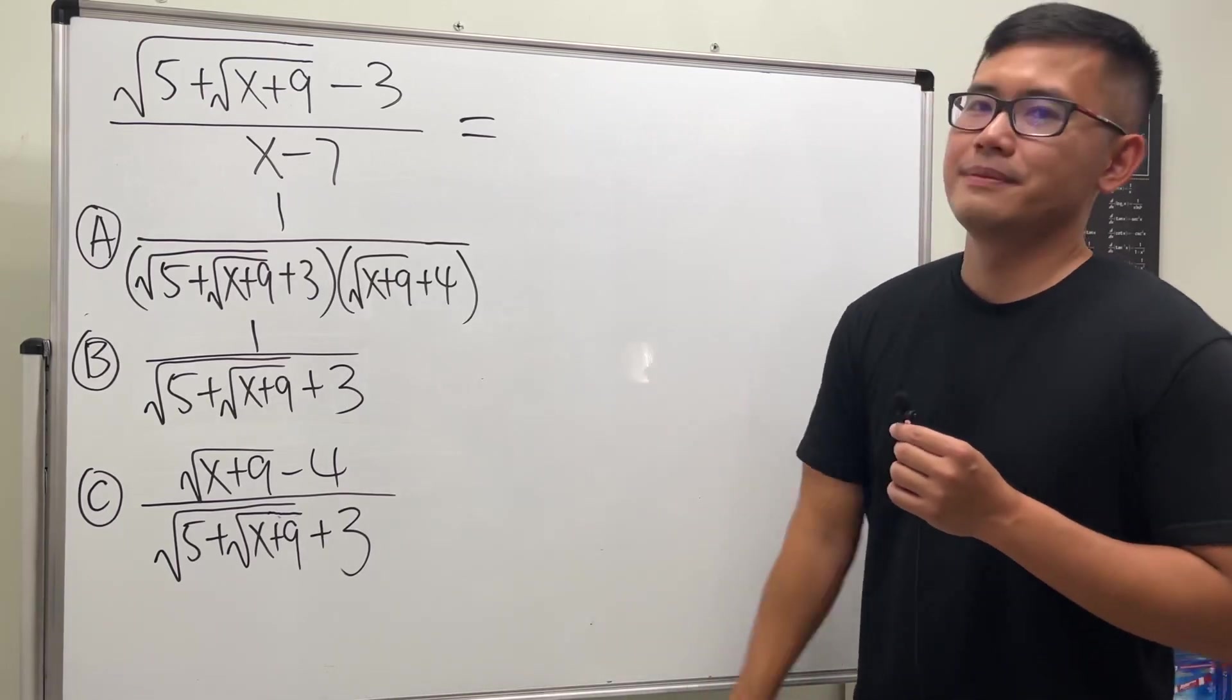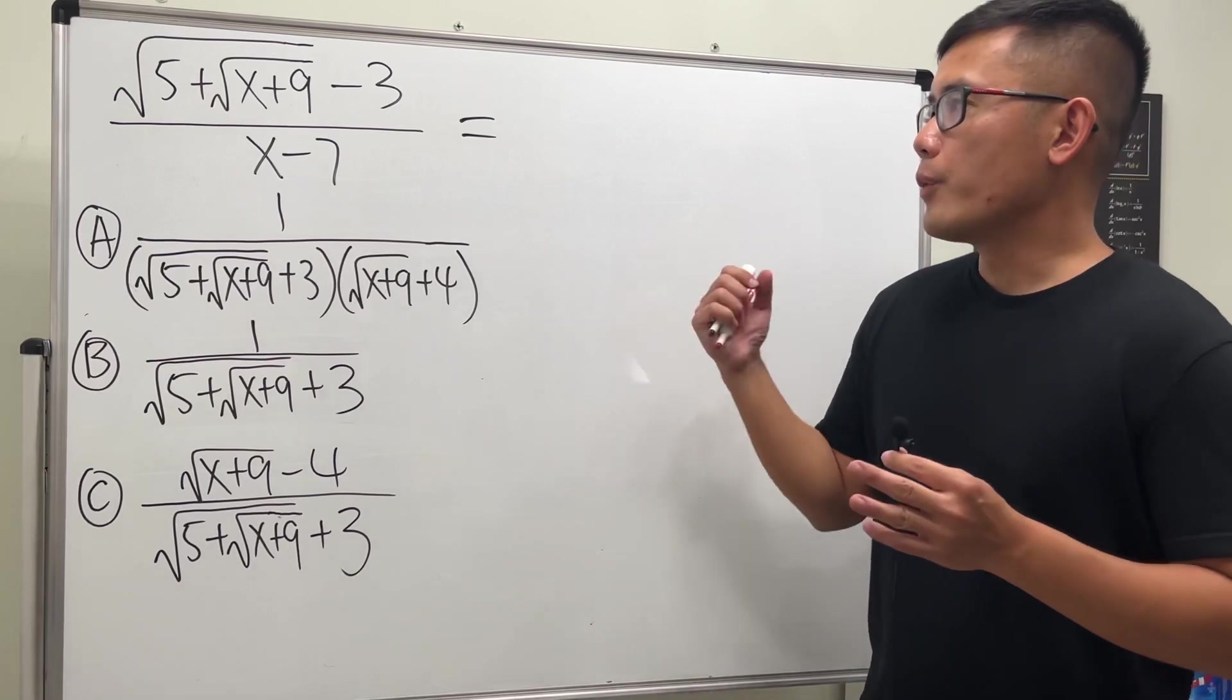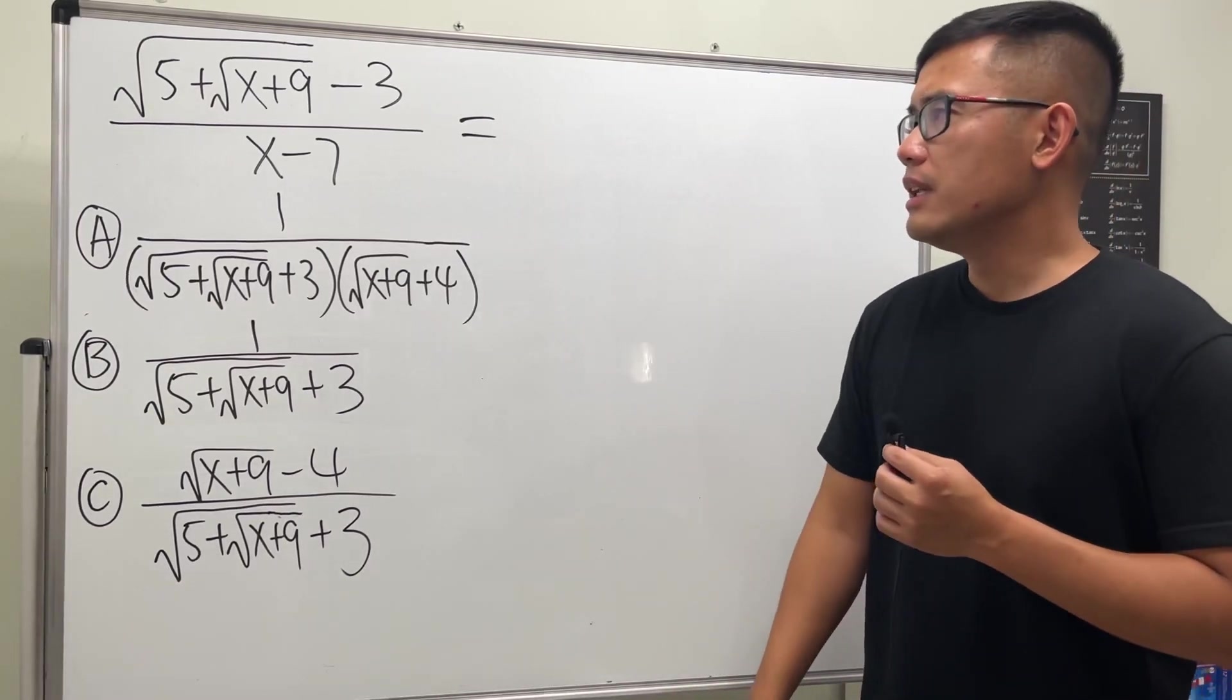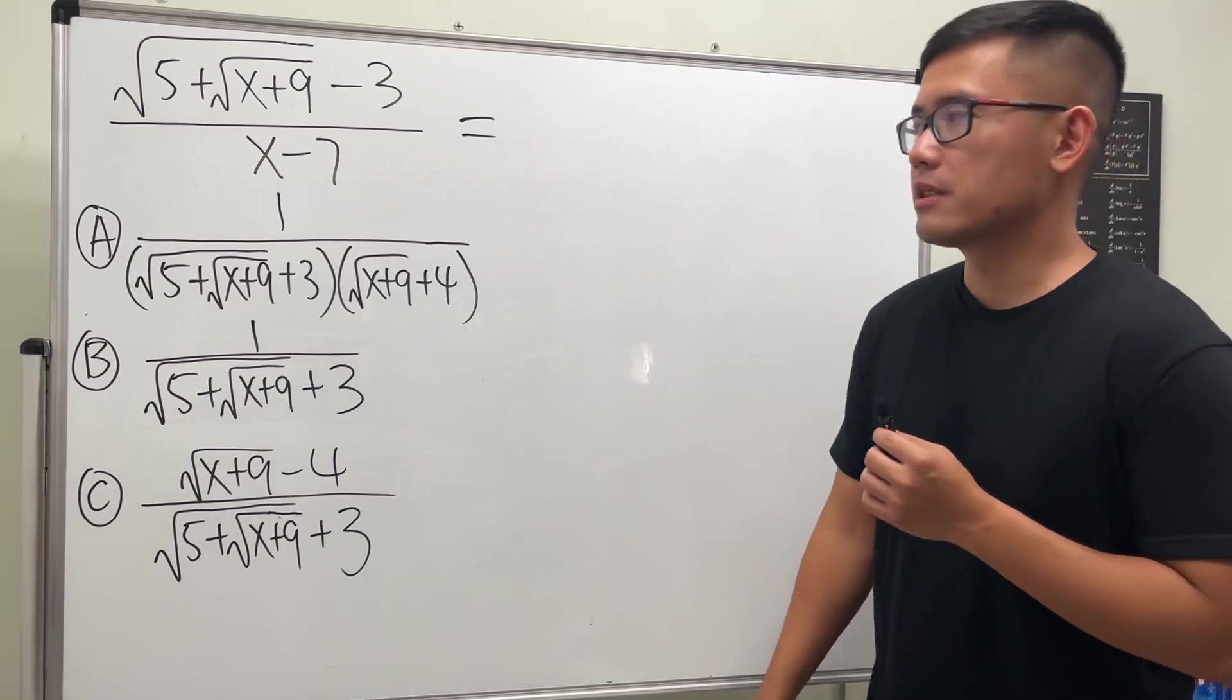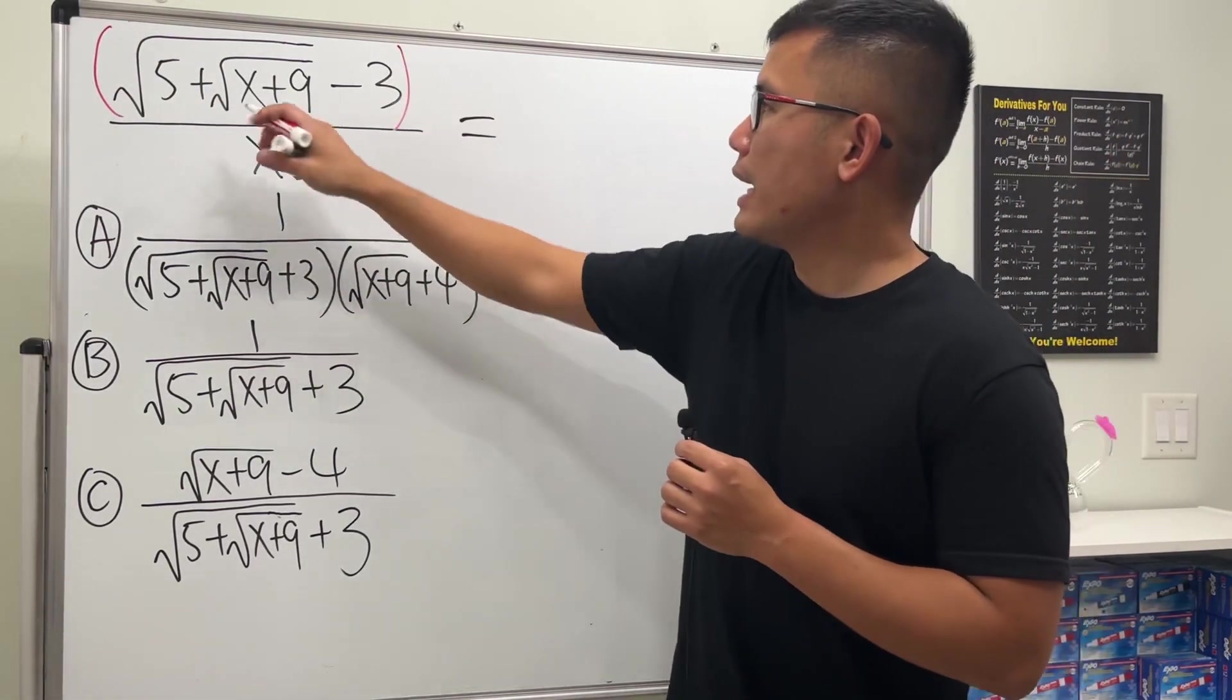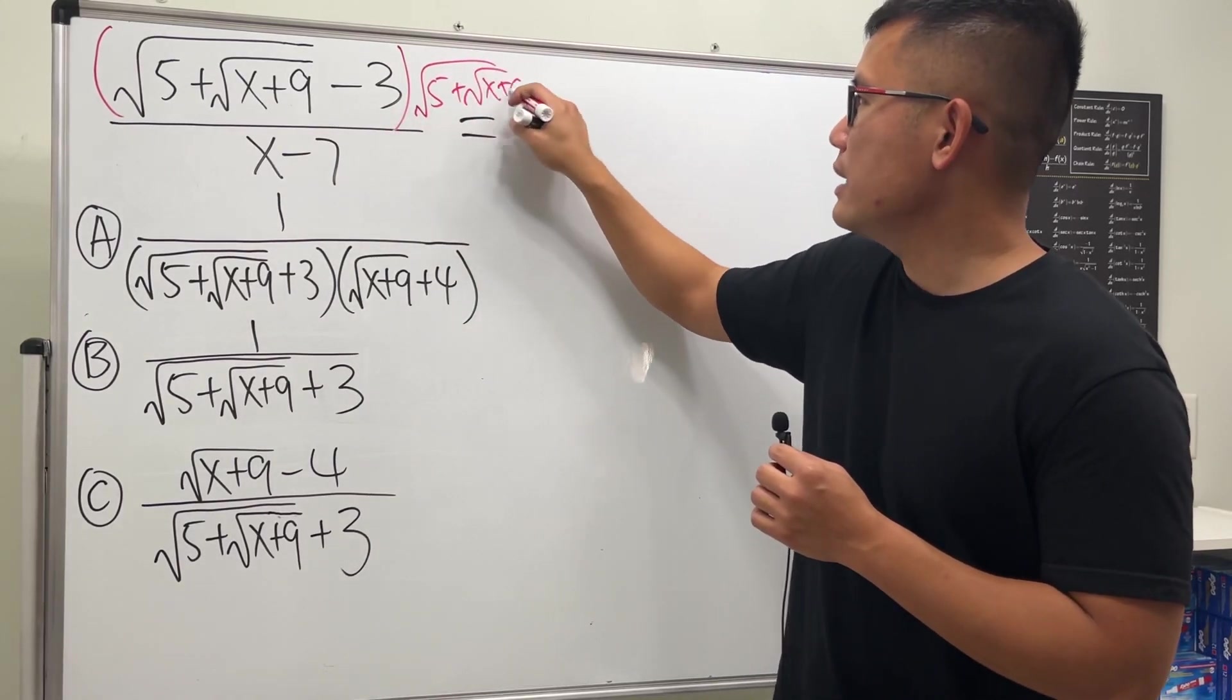Done? Okay, so here's the deal. Whenever we have square roots in a rational expression like this, let's just go ahead and multiply the top and bottom by its conjugate. So let's multiply the top by the square root of 5 plus square root of x+9.